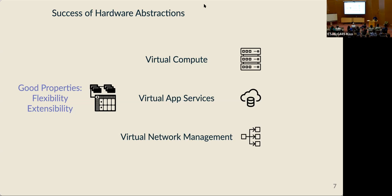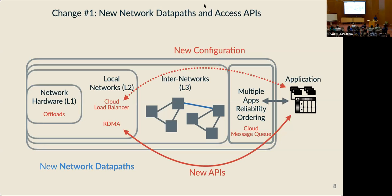Let's take a closer look at the way applications are using the network. My argument is that changes to modern networks have started to erode this nice vision of abstractions. There are two types of changes that are especially important. The first is changes to the network infrastructure itself and how we access it — for example, the adoption of RDMA networks and corresponding use of RDMA APIs, or the use of cloud load balancing. I'd like to refer to this type of change as a shift towards new network data paths.